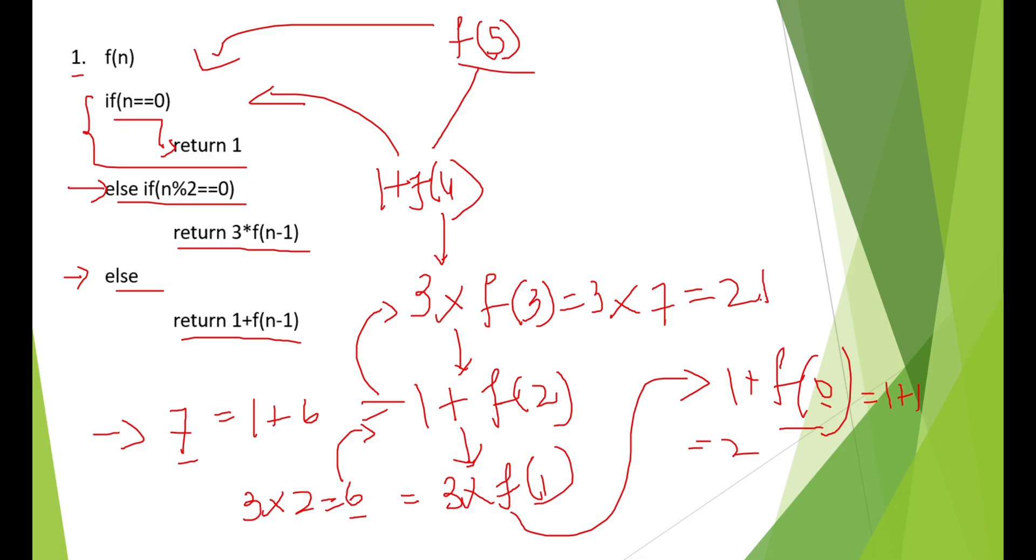Again, you substitute 21 here. We get 1 plus 21, which is nothing but 22. So the value of f of 5 will be 22.